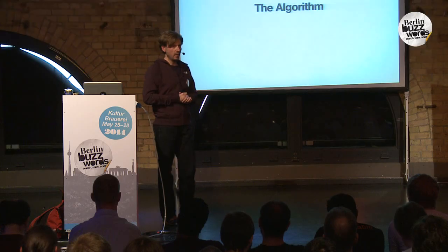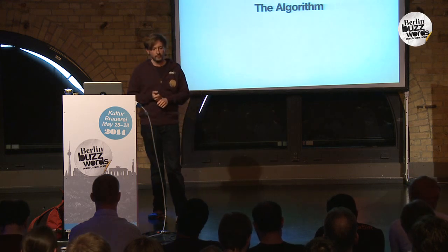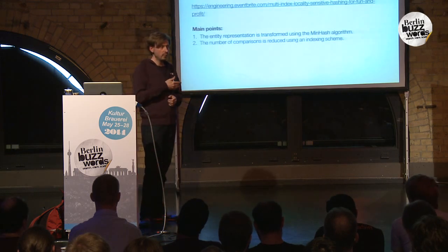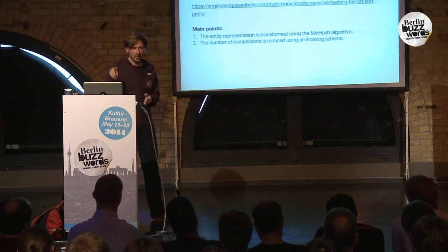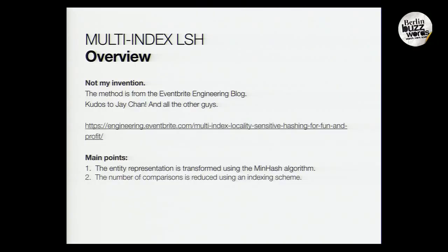I want to focus on one specific algorithm I find highly interesting. It's not my invention — I read about it in the Eventbrite engineering blog; many thanks to Jay Shen who wrote the article. It's based on university research cleverly combined. The main points are: you transform your data using hashing, then create an indexing scheme for fast lookup. I'll now walk you through the algorithm — due to time it will be fast, but hopefully you'll get a general idea.